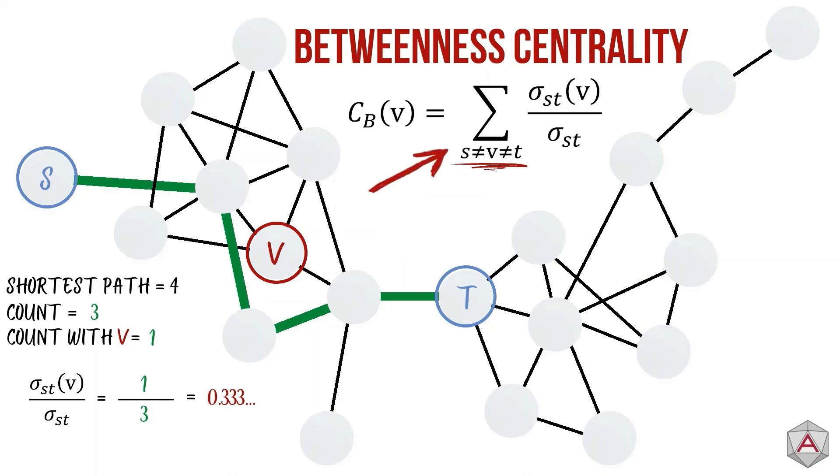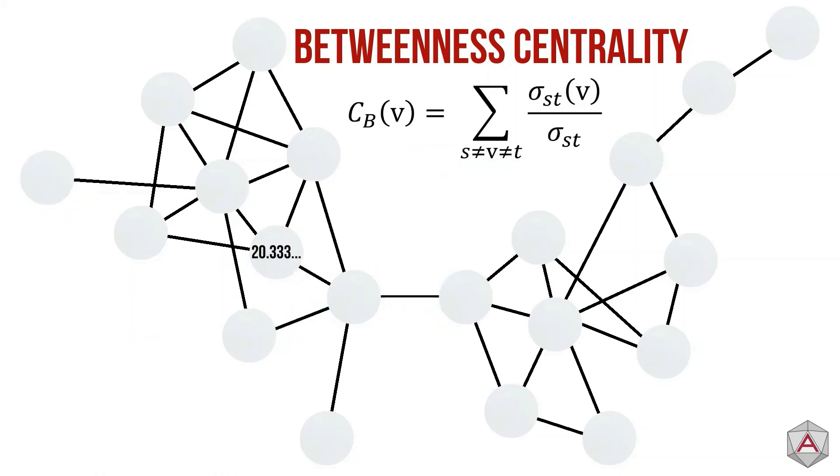This sigma notation tells us we need to repeat this step for all combinations of S and T, except where they are the same as V, the node we are measuring. We sum together all our results to get 20.33 recurring. You'll notice this is a lot larger value than the previous centrality scores, which is why you'll often find the number normalized. Let's apply this to the rest of our graph.